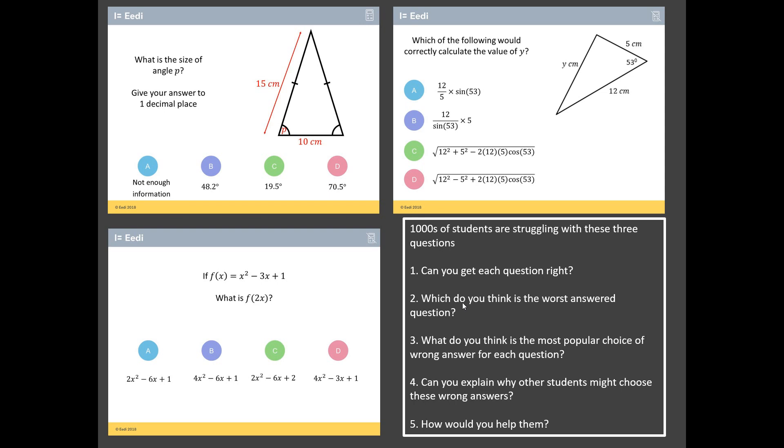I've got five challenges for you. Your first challenge is, can you get each of these questions correct? Thousands of students have struggled with them, so that's going to be easier said than done. Secondly, out of these three questions, what do you reckon the worst answered question is? Then for each of these three questions, can you predict in advance what the most popular choice of wrong answer might be? Can you explain why students might choose that popular wrong answer? And finally, if you were sat next to one of these students who were struggling, how would you help them out?